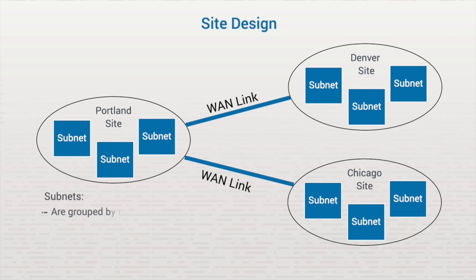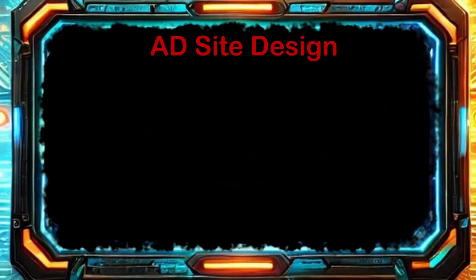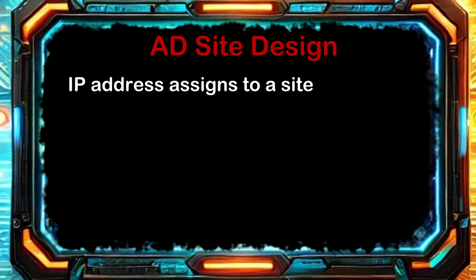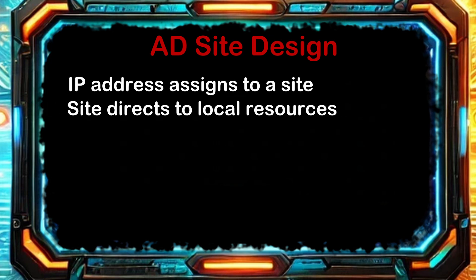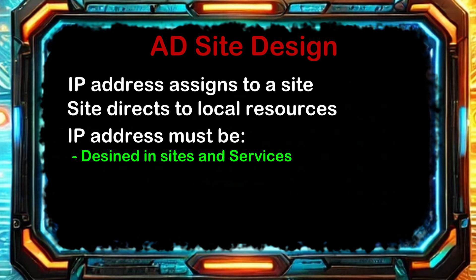Each site is a physical grouping of IP subnets connected with high-speed links. A subnet is a grouping of computers based on IP address or physical network segment, and each subnet possesses its own unique network address space. When a computer boots, Active Directory uses the computer's IP address to assign it to a site. In this way, clients are directed to resources within their own site. You must define the IP address within sites and services and associate it with the corresponding site, and the computer must also be assigned the correct IP address for its location.